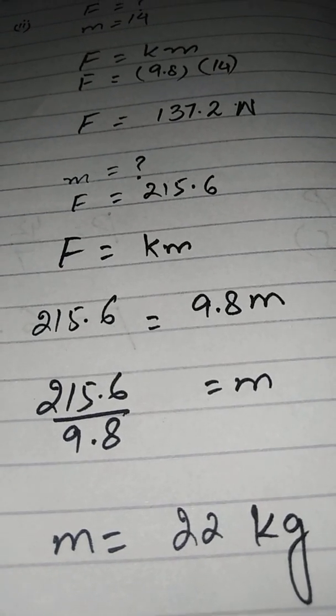Now in part 4, you have to draw the graph of F against M. Before drawing the graph, you will make a table. In this table you will assume values of M to get the values of F. The equation is F is directly proportional to KM.